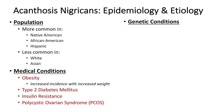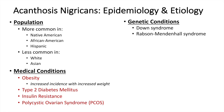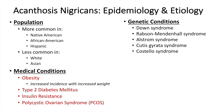The association between genetic conditions and acanthosis nigricans again comes down to the genetic condition predisposing individuals for insulin resistance or abnormal glucose utilization, which increase the likelihood of acanthosis nigricans. Some of these genetic conditions include Down syndrome, Rabson-Mendenhall syndrome, Alston syndrome, Cutis-Gyrata syndrome, and Costello syndrome.